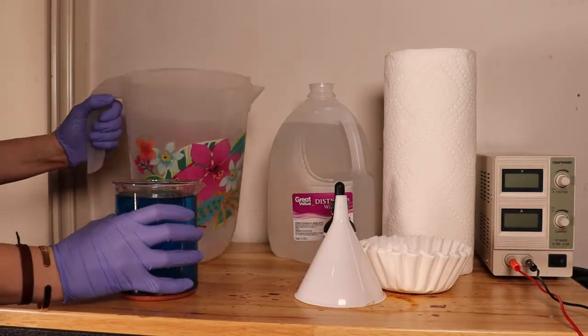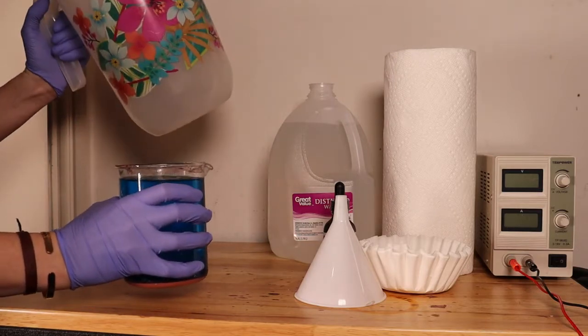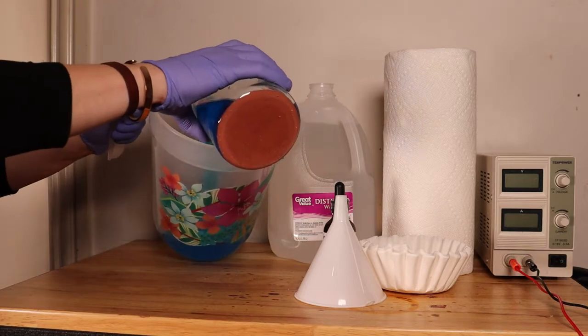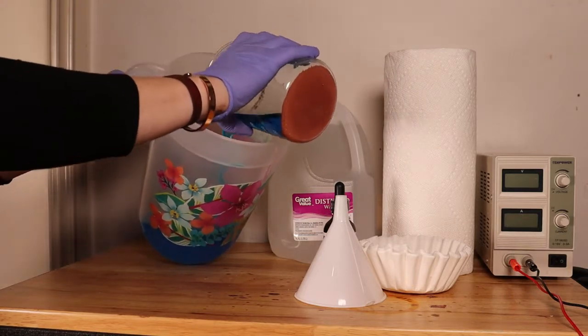The first step is to pour your solution into your old jug and you'll notice all the copper sludge at the bottom, that's what we're trying to get rid of.